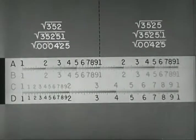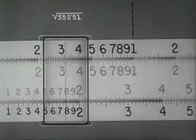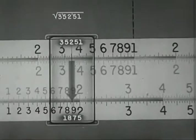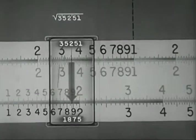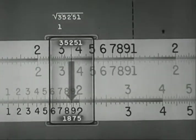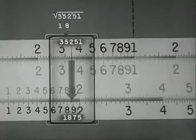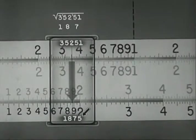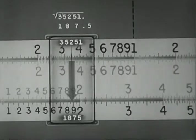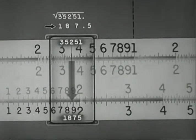In any mathematical problem, it is of the utmost importance that the decimal point be correctly placed in the answer. In obtaining squares and square roots, there is a simple means for placing the decimal point. Take this problem for example. We read the answer 1875. Where does the decimal point belong? 1 under the 3, the 8 under the 52, the 7 under the 51. The 5 is left. Place it to the right of the decimal point, and we have the answer 187.5.